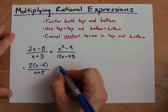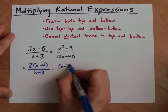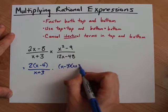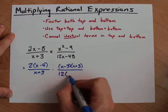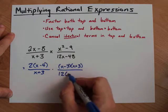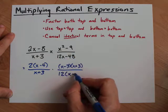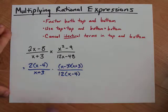This factors by difference of squares. That's x-3 and x+3. And this also common factors out. I can divide both of them by 12, so I put 12 in front of my bracket and divide both of those by 12 to give 12x-4.